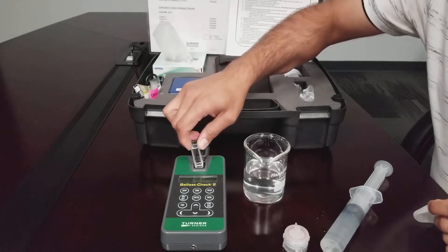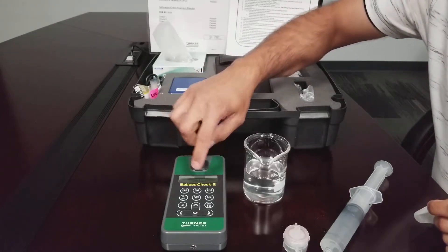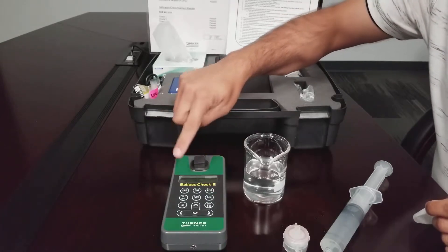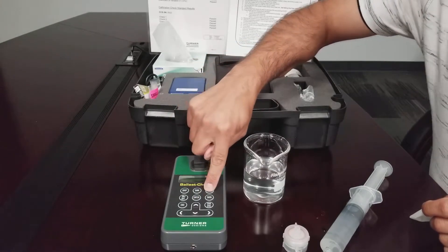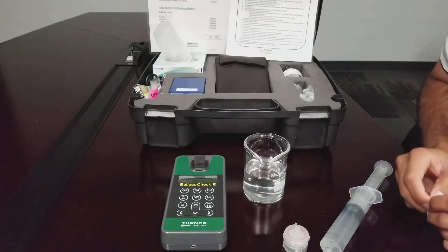Insert the cuvette into the sample compartment, close the lid, and press read. Press enter to continue with the current ship and tank values. Then press read and wait for the measurement to complete.